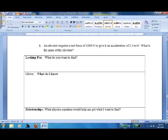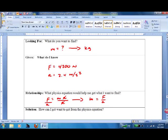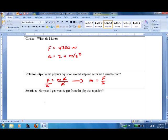Last one we'll do. The elevator requires a net force. It gave us that. Acceleration. It did not give us mass. We know that's going to be in kilograms. Looks like F equals MA. We want to get M alone. So we get M equals F over A. M equals 4,200 newtons over 2.4 meters per second squared. Calculator.